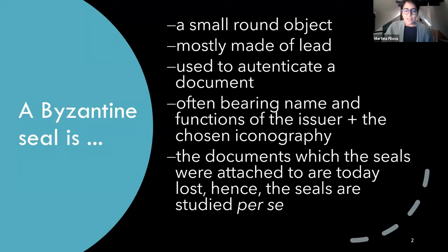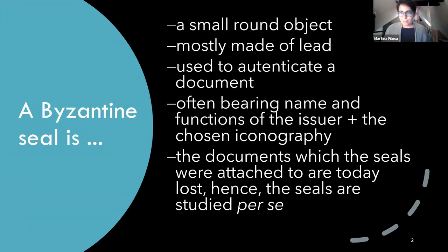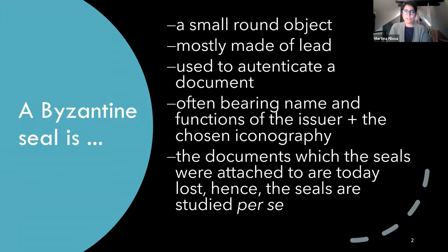I would like to start by saying very quickly what a Byzantine seal is. It is, of course, a small round object as we might expect. It is mostly made of lead. It is used to authenticate a document, and it very often bears the name, function, and titles of the seal issuer and the chosen iconography.